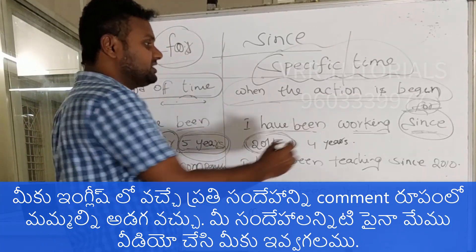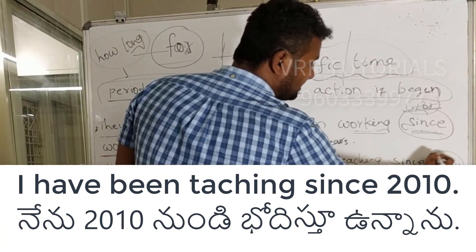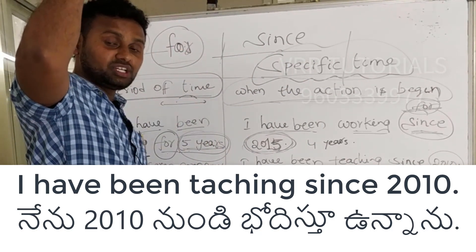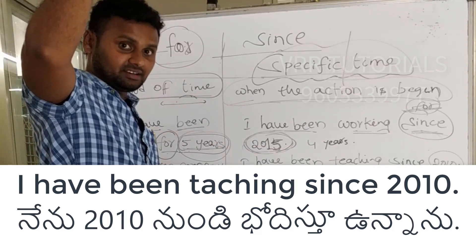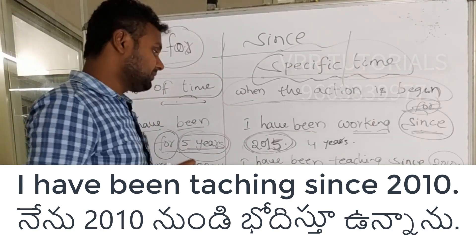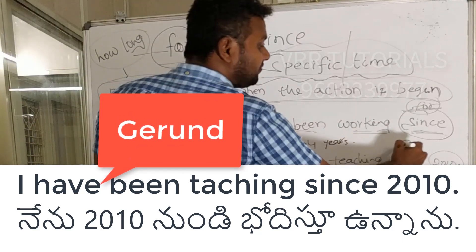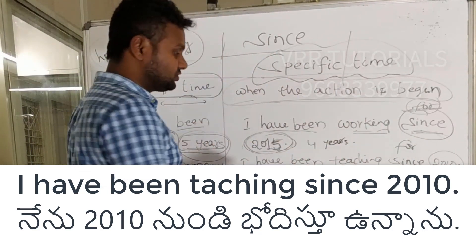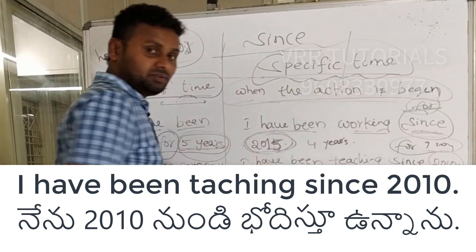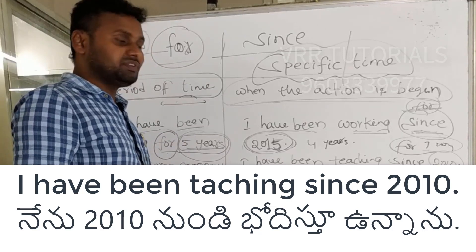If you want to mention a particular year, use 'since'. Next example: I have been teaching since 2010. I started teaching in 2010 and have been continuing. From 2010 to now is nine years, so you can also say 'I have been teaching for nine years'.